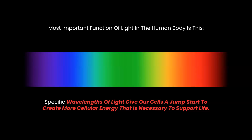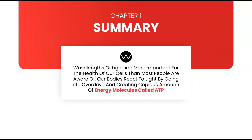The most important takeaway from this first chapter is that the main function of light in the body is this: specific wavelengths of light give our cells a jump start to create more cellular energy necessary to support life. These wavelengths are more important for the health of our cells than most people are aware of. Our bodies react positively to light by going into overdrive, creating copious amounts of energy molecules called ATP. And these same wavelengths are found in the sun — but with technology, we can put them into devices at greater powers, vastly helping the human body without the negative effects of the sun.